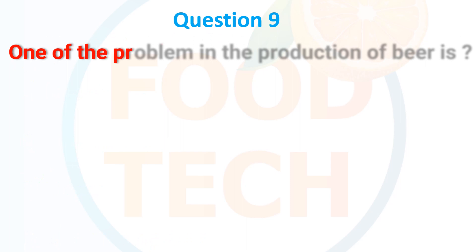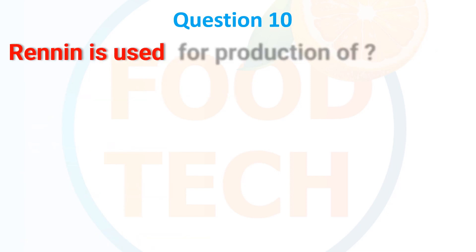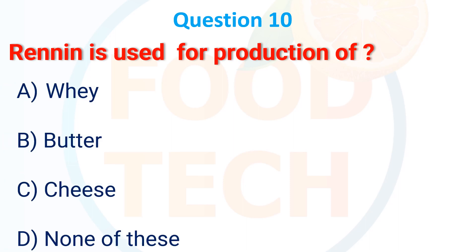One of the problems in the production of beer is: A. Enzymatic browning, B. Haze in beer, C. Fermentation, D. All of the options. The answer is B. Haze in beer.